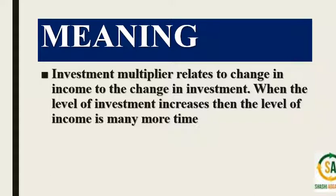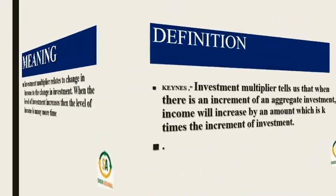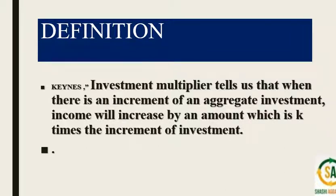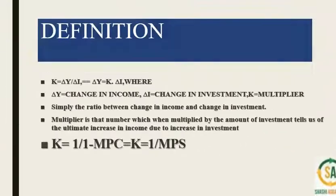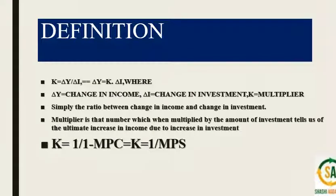The investment multiplier relates the change in income to the change in investment. When the level of investment increases, income also increases, but that income is many more times the increase in investment. According to Keynes, the investment multiplier tells us that when there is an increment of aggregate investment, income will increase by an amount which is K times the increment of investment. The formula is: K equals change in income divided by change in investment; and delta Y equals K multiplied by the change in investment.